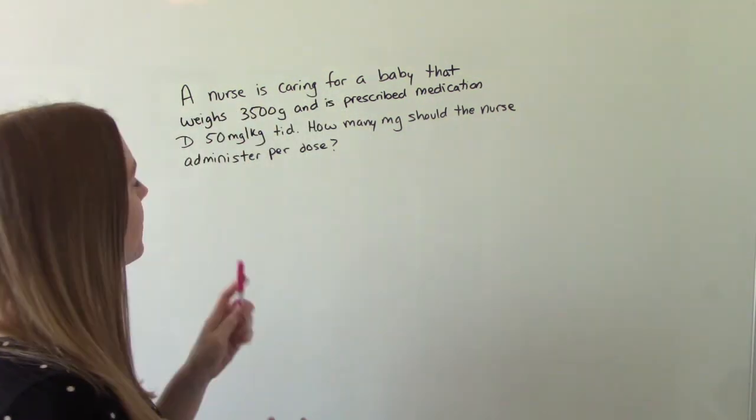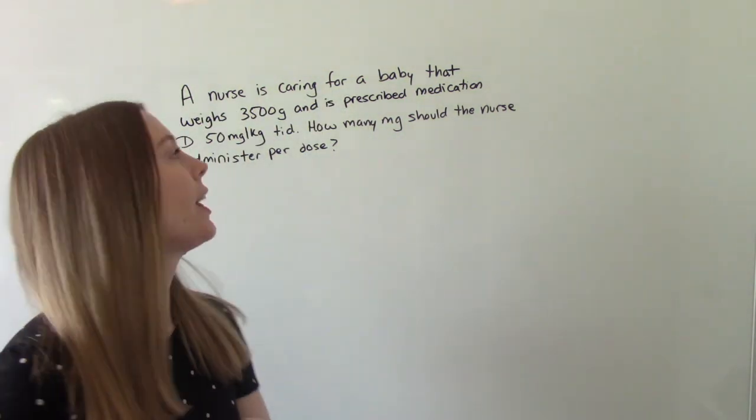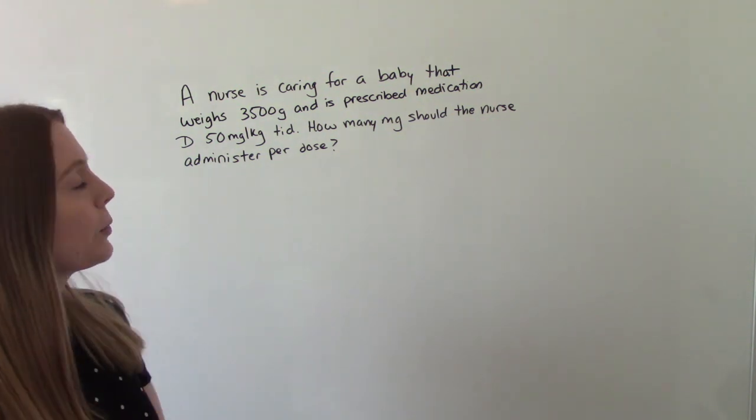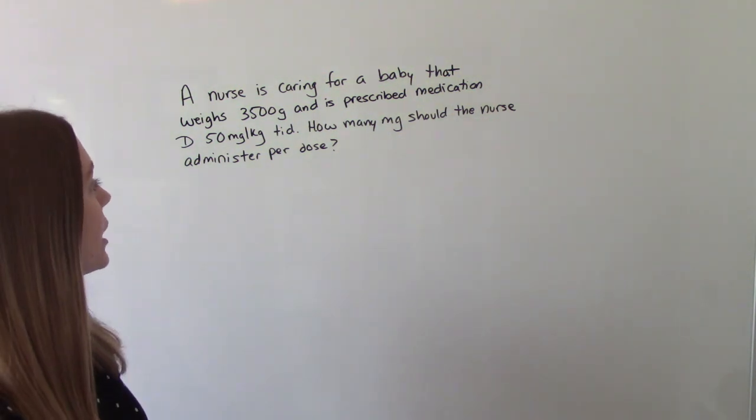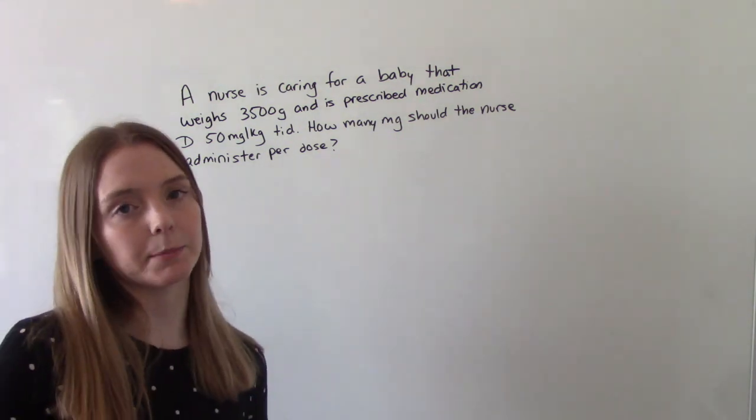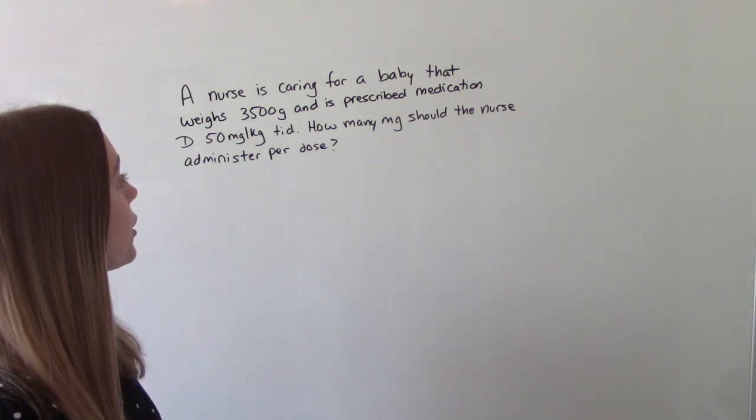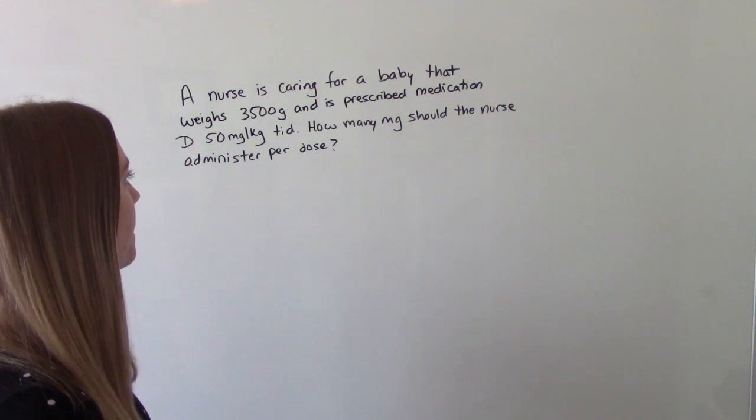So we have the nurse caring for a baby that weighs 3,500 grams and is prescribed medication D, 50 mg per kg, three times a day. How many milligrams should the nurse administer per dose?